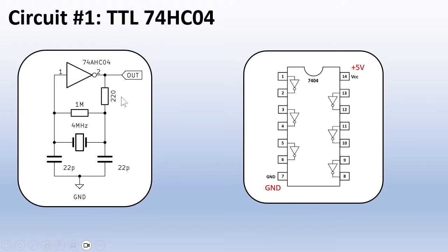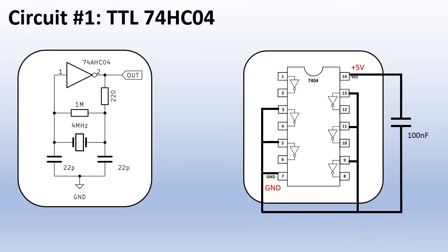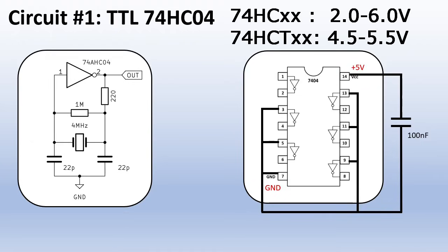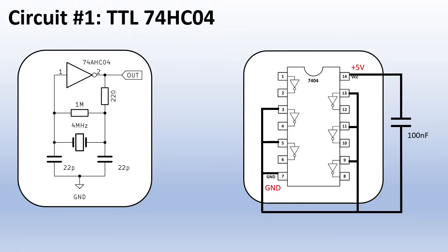This 220 ohm resistor is to limit the current in the crystal to prevent overdriving it. The power is connected to the corner pins 14 and 7. It is best to add a decoupling capacitor of about 100 nF over the power pins. And also, it is best to ground the inputs of the inverters that you do not use for stability. The 74HC series ICs can work from 2 to 6V, the HCT version 4.5 to 5.5V. And they are very fast. Let's power this one up and see how it works.